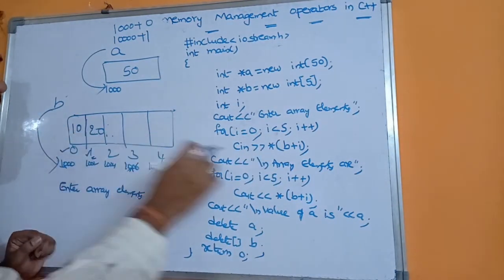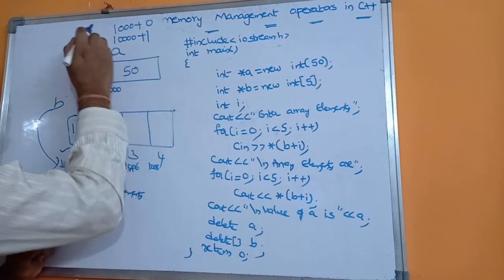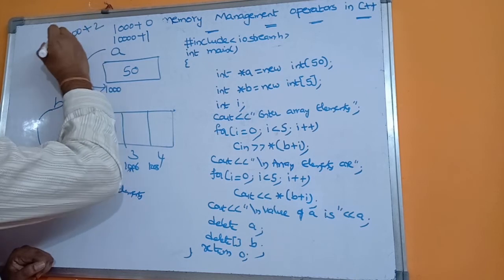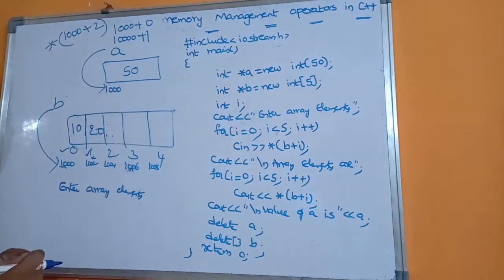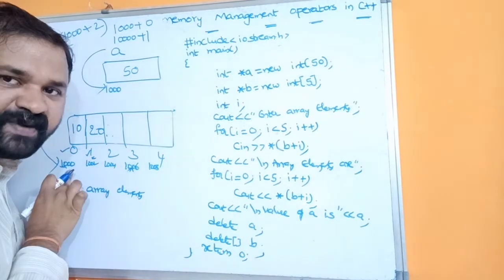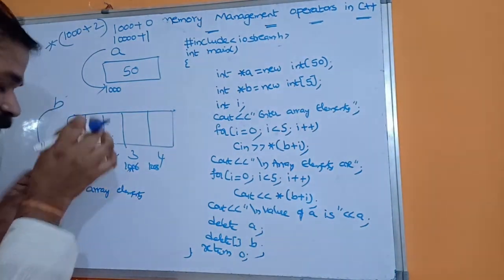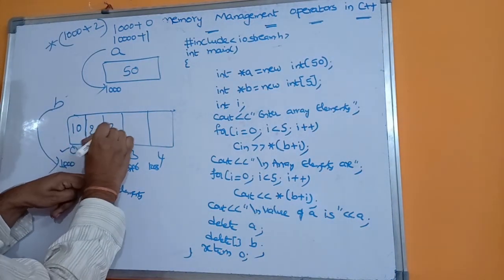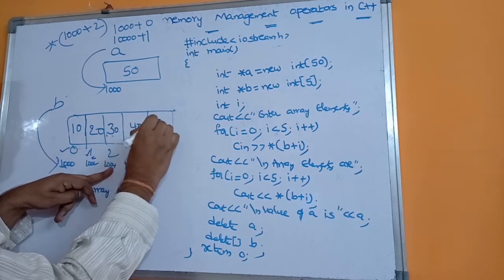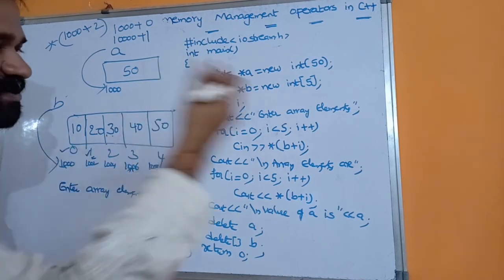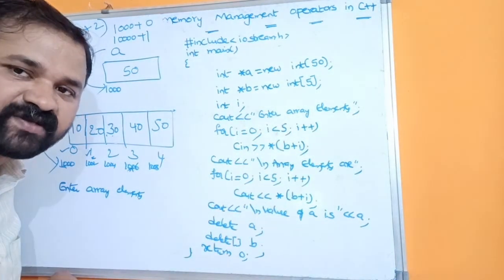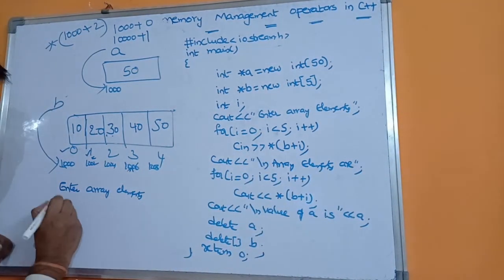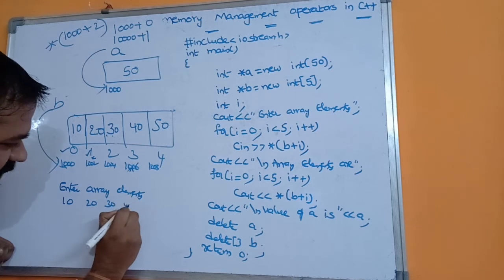i becomes 2, 2<5 is true. *(b+2): 1000+2 means 2 memory locations further — first 1002, next 1004. So 30 is stored at 1004. Then 40 is stored at 1006, and 50 is stored at 1008. Then i becomes 6 (after i++ from 5), 6<5 is false, so control exits the for loop.